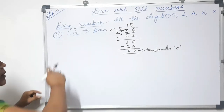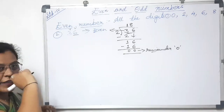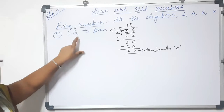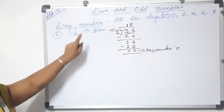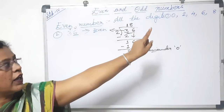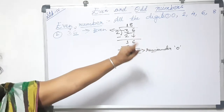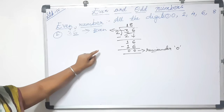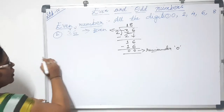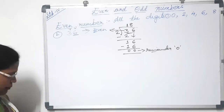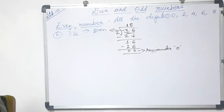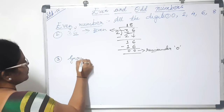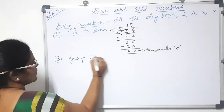So the first rule is that 0, 2, 4, 6, 8 are even single-digit numbers. The second rule is that for any 2-digit or 3-digit number, the units place should have 0, 2, 4, 6, or 8 for it to be called an even number. Even numbers are those numbers which can be grouped into pairs.